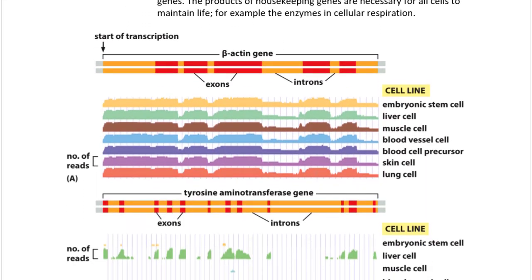Beta-actin is a common housekeeping gene — all cells make it. The sequencing data shown here displays how much beta-actin messenger RNA is expressed in different cell types: embryonic stem cell, liver cell, muscle cell, blood vessel cell, blood cell precursor, skin cell, and lung cell. You can see the amplitude of expression is the same across all of them. The lower regions correspond to introns, which are absent from the processed messenger RNA.